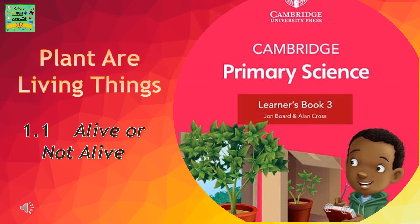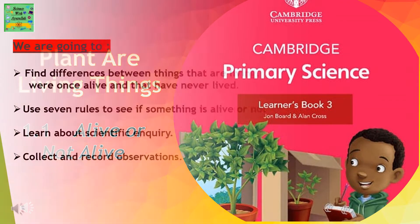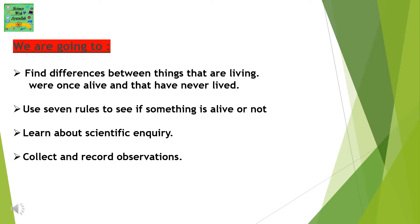Plants are living things. In this section, 'Alive or not alive,' we are going to find the differences between things that are living, were once alive, or have never lived. We will use 7 rules to see if something is alive or not, and learn about scientific enquiry by collecting and recording observations.